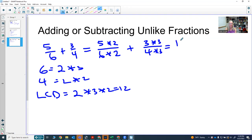That will get me 10 over 12 plus 9 over 12. Now they have the same denominator, and I can now add them together. 10 plus 9 is 19 over 12.